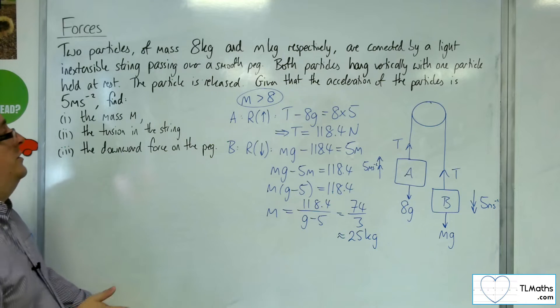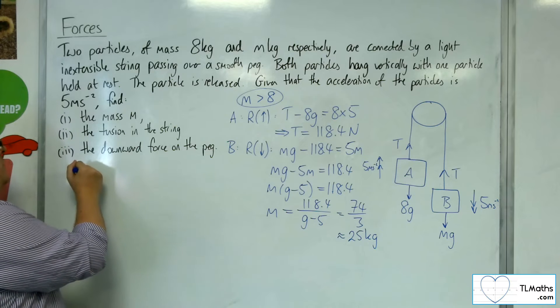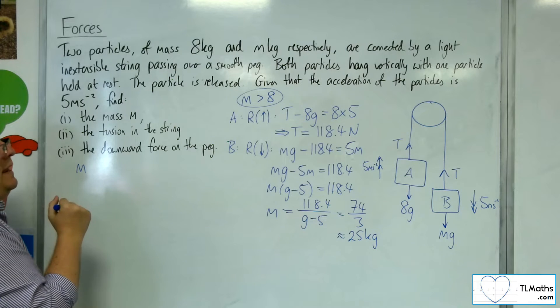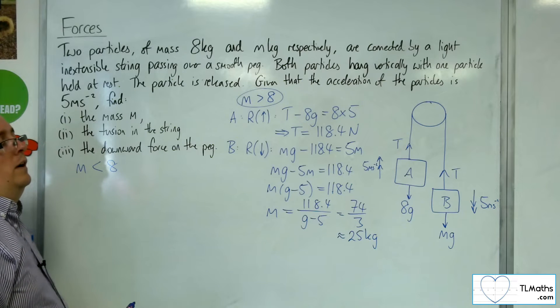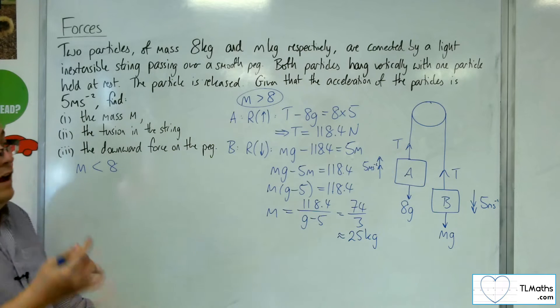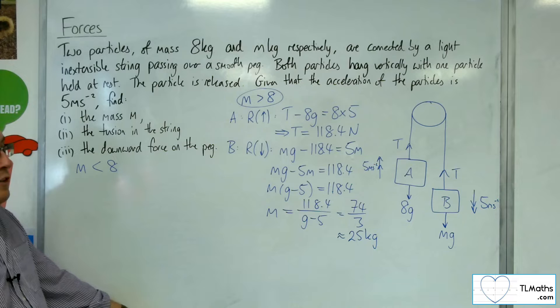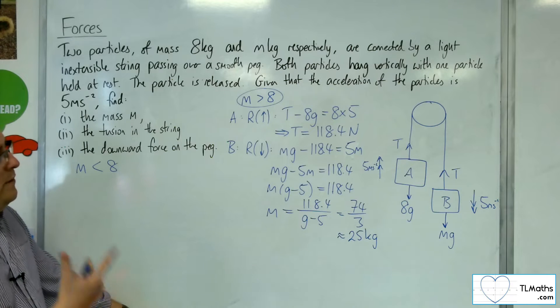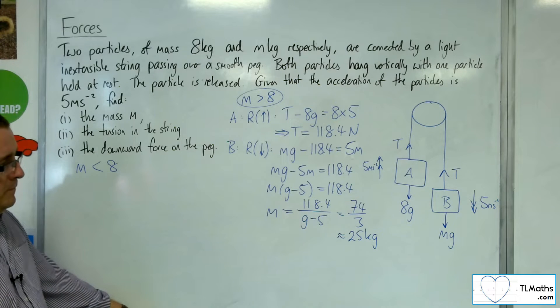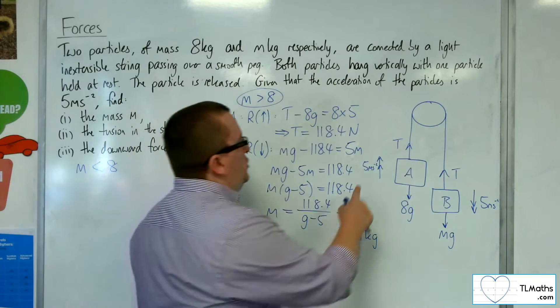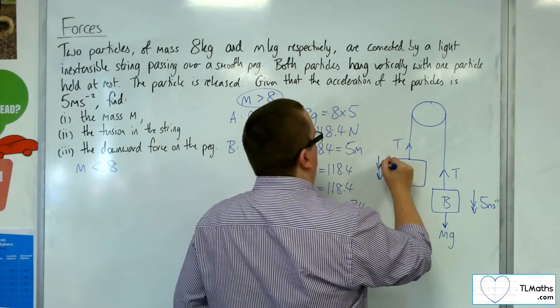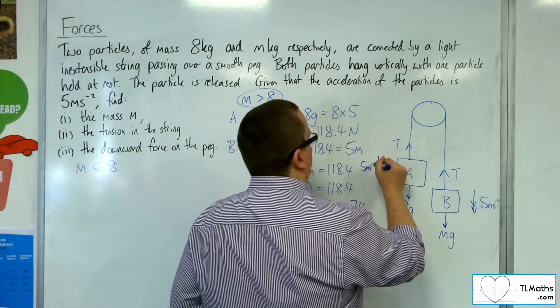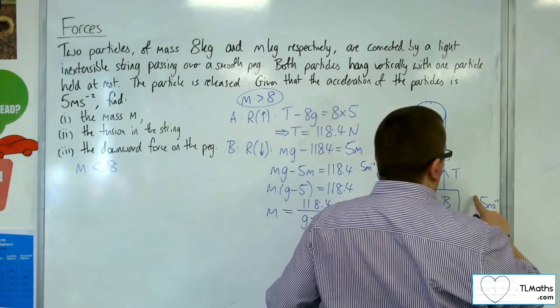If, on the other hand, the mass of the object is less than 8... Now, we can't have equal to the 8. They can't have both the same mass. Otherwise, we won't be accelerating at 5 metres per second per second. So if the mass is less than 8, then the situation we would have is that we would now be accelerating this way. So I'll just change the direction of the arrow.